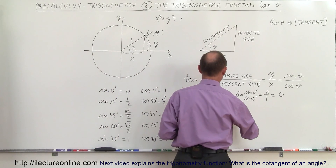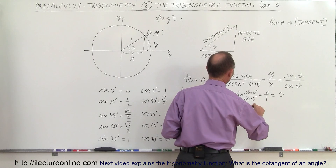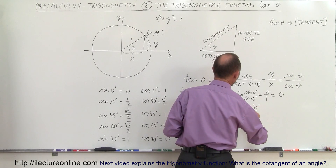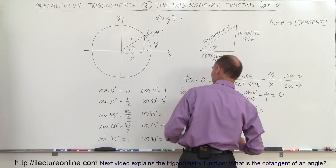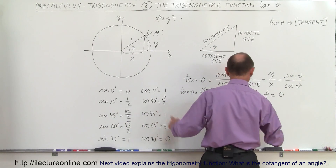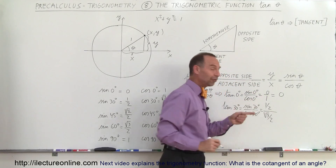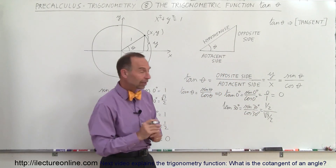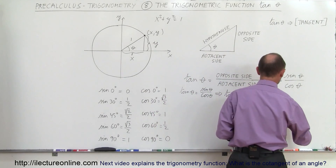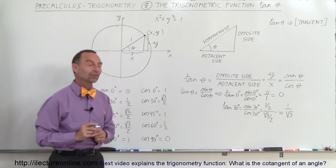The tangent of 30 degrees is equal to the sine of 30 degrees divided by the cosine of 30 degrees. The sine of 30 degrees is 1/2 and the cosine of 30 degrees is the square root of 3 over 2. Both fractions have a 2 in the denominator, so this simplifies to 1 over the square root of 3 for the tangent of 30 degrees.